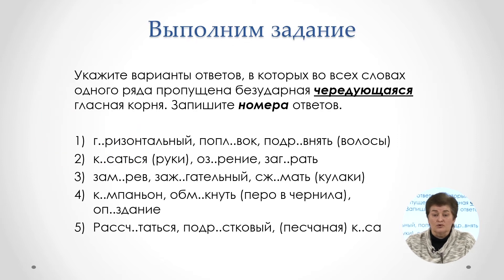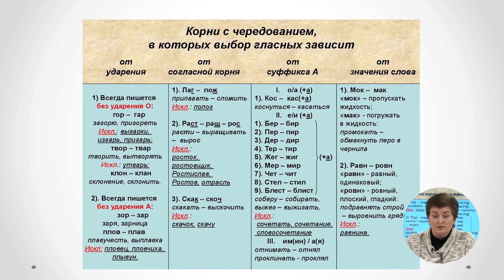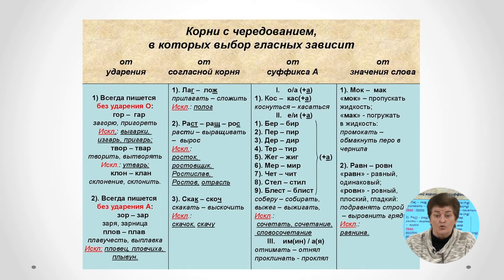Итак, задание просит нас во всех словах одного ряда найти безударную чередующуюся гласную в корне. Напоминаю, что с нами рядом таблица. Вы скажете: но её же не будет на экзамене. Да, именно поэтому при подготовке необходимо ею пользоваться. Систематическая работа с таблицей позволит запомнить эти 21 корень.